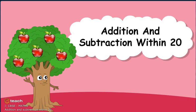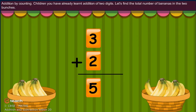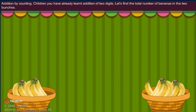Addition and subtraction within 20. Addition by counting. Children, you have already learned addition of two digits. Let's find the total bananas in two bunches.